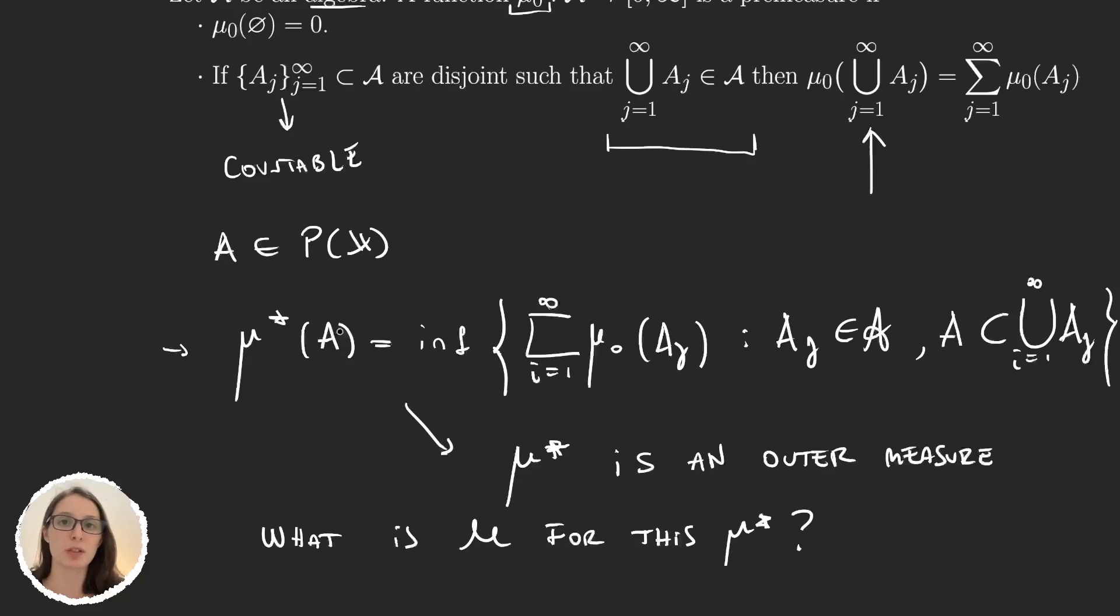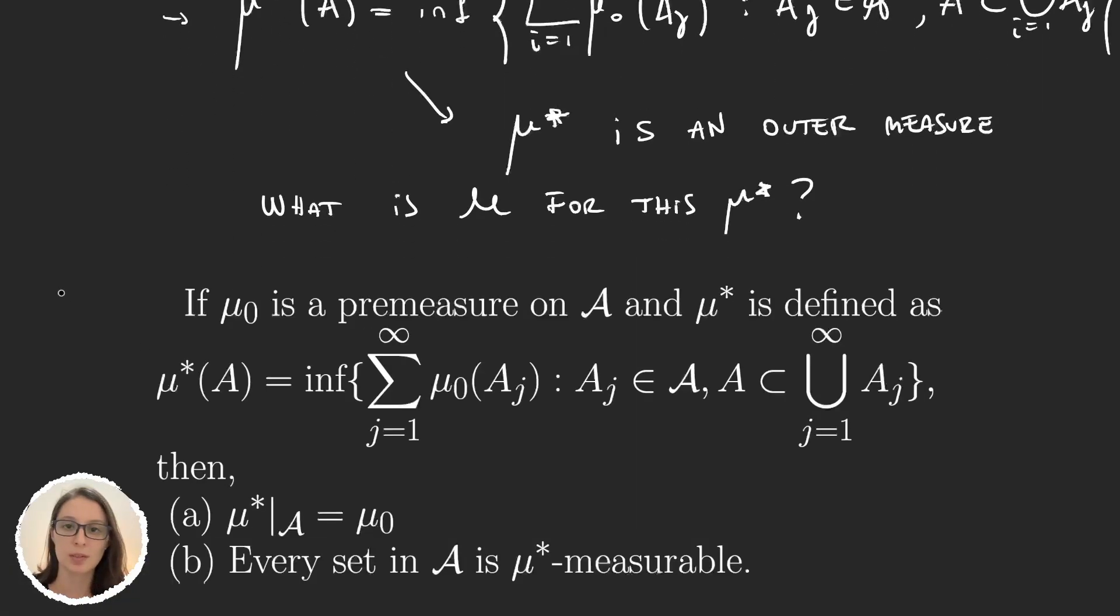But what did we gain with all this? I told you that we were going to see now that μ* measurable sets for μ*, the outer measure defined this way, were very simple. Let's see what I meant by this. What I meant is that we have this theorem.